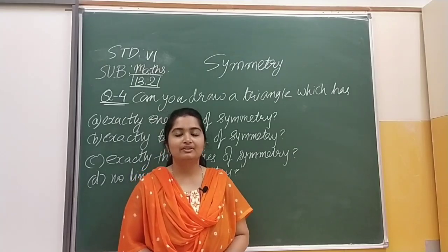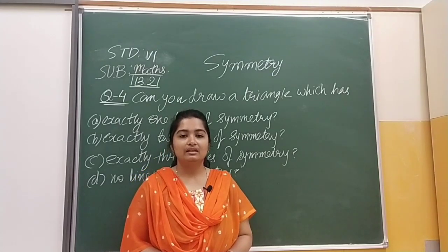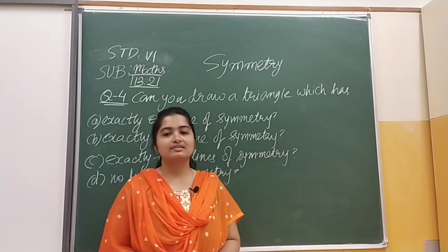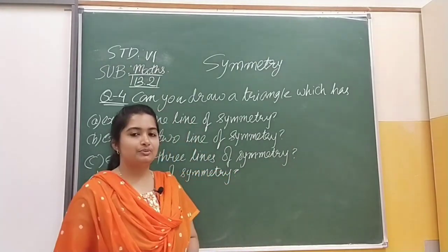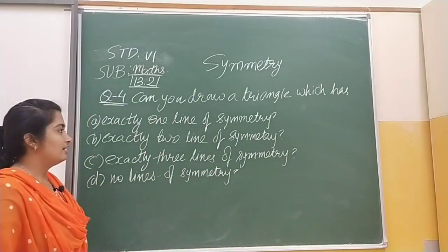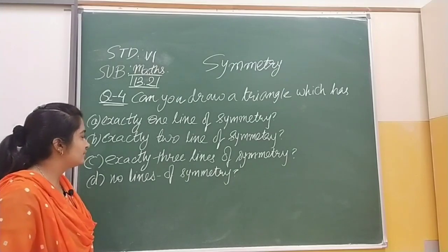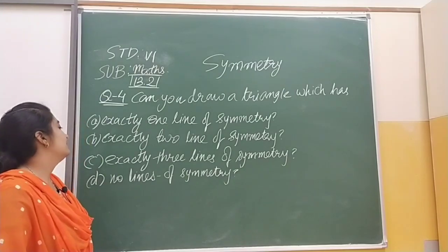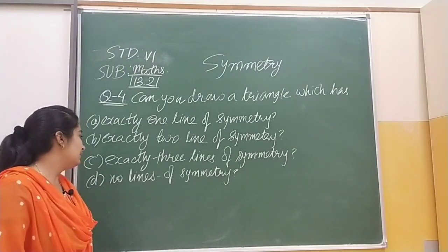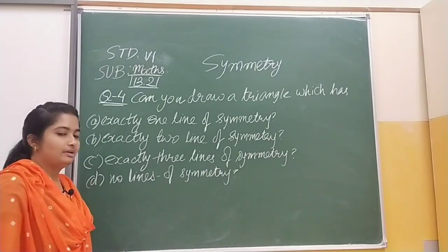Hello students, hope you all are fine at home and keeping your health good. Here we have question number 4 of exercise 13.2. The question says: can you draw a triangle which has exactly one line of symmetry, exactly two lines of symmetry, exactly three lines of symmetry, and no lines of symmetry?